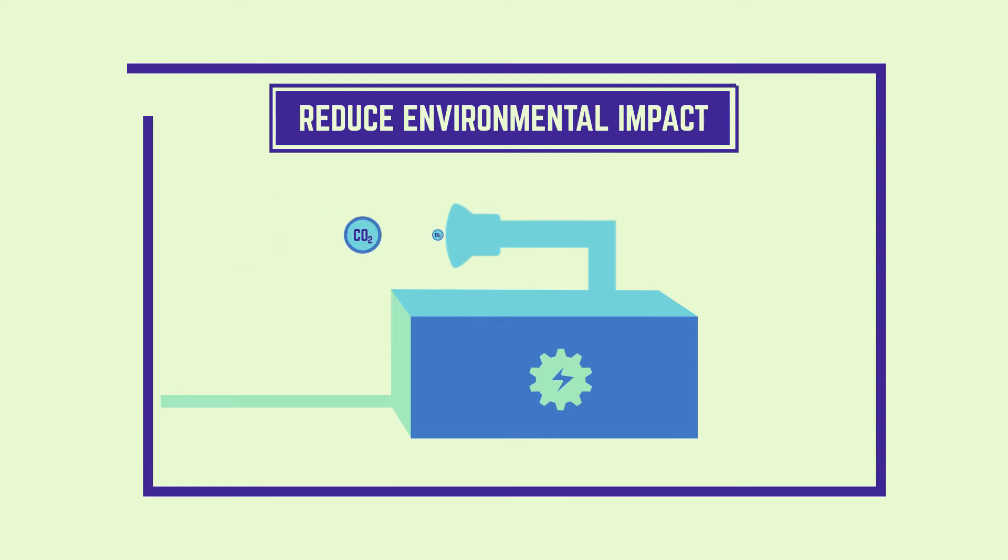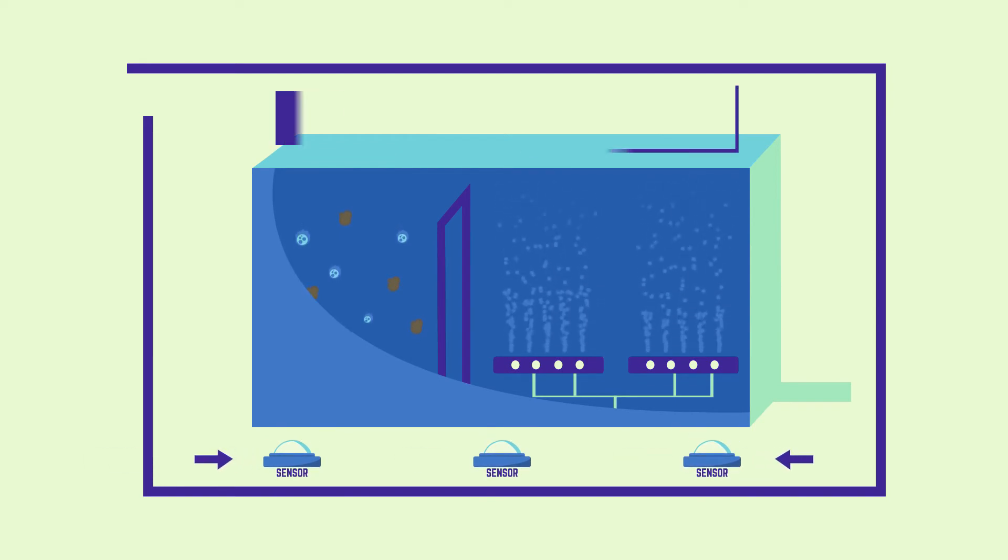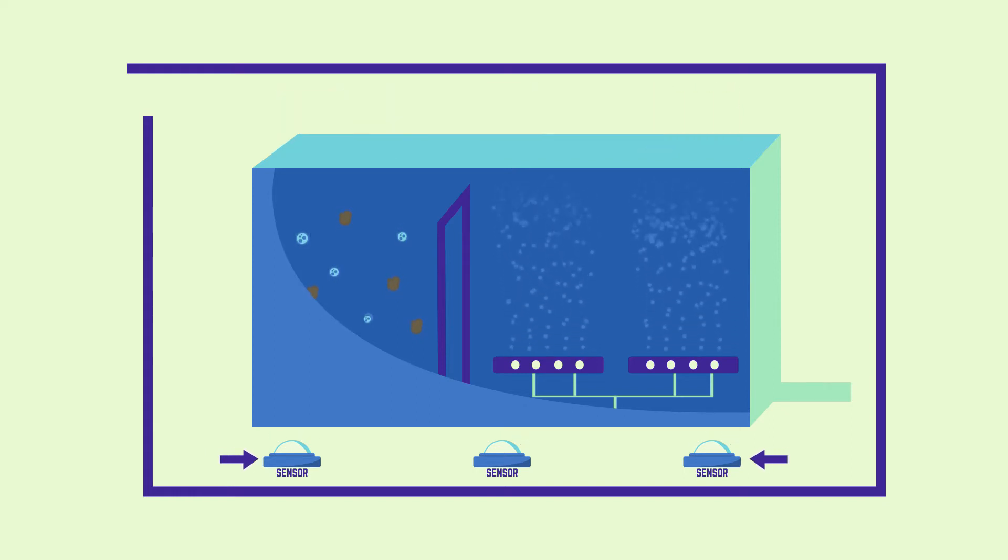To reduce this energy consumption and its corresponding environmental impact, Acciona Agua has developed within the LIFE Brainy Mem project an automation system for the aeration, which adjusts the air supplied based on the real-time requirements of the plant.